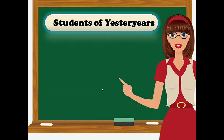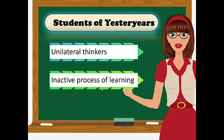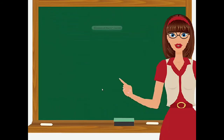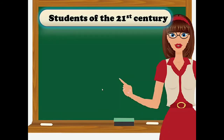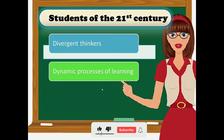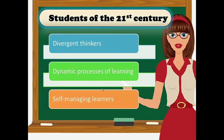Students of yesteryears are considered unilateral thinkers. They have an inactive process of learning and they are dependent learners. While students of the 21st century are considered divergent thinkers. They have dynamic processes of learning and they are self-managing learners.